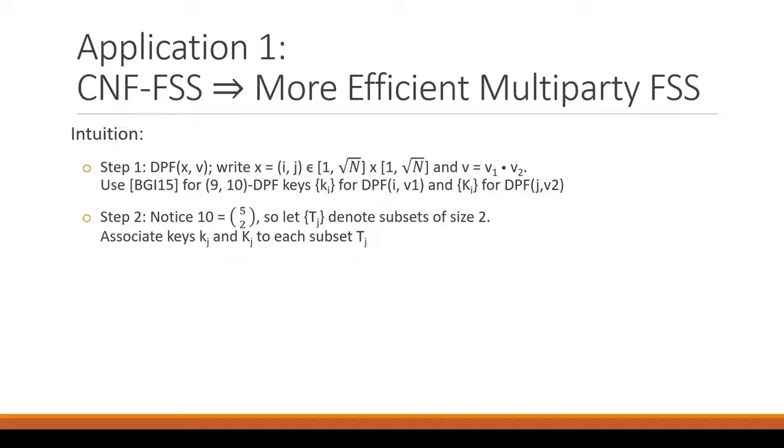Step 2 is to notice that 10 was deliberately chosen, which is 5 choose 2. Again, the 5 and the 2 are going to come from the threshold and the number of parties. So let's let T denote all subsets of size 2, and we will enumerate these and associate keys to each subset.